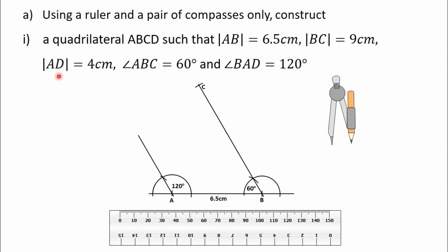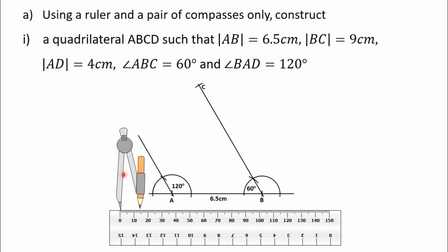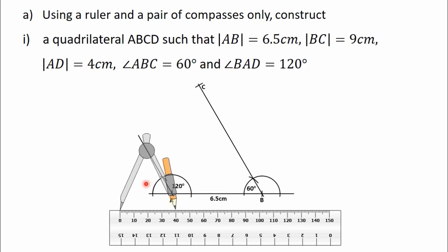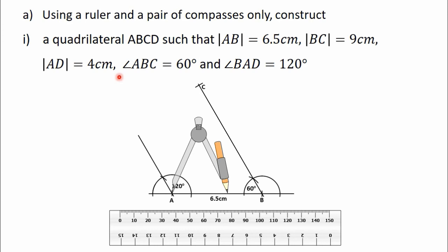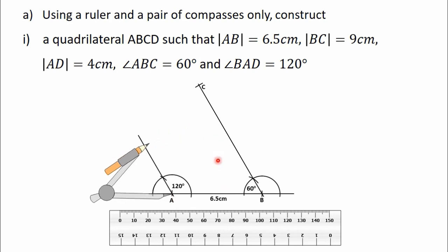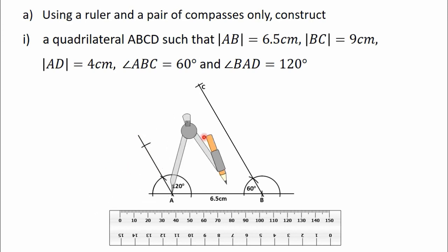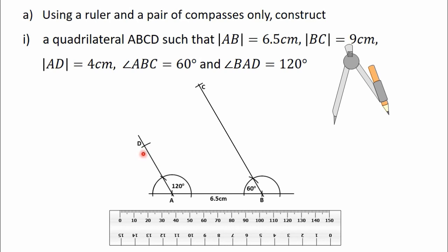The length of side AD is 4 cm. To get AD, measure 4 cm on the ruler — put the needle on point 0 and stretch to 4 cm, which is 40 mm. Then move the needle to point A, turn it and construct an arc to intersect the line. The point of intersection gives us point D. We now have point A, point B, point C, and point D. To complete the quadrilateral, draw a line joining point C to point D. We have now constructed the quadrilateral ABCD.